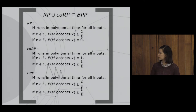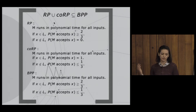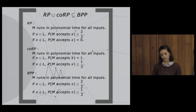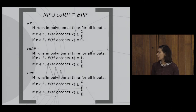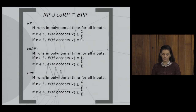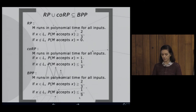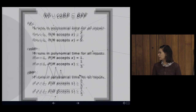The first relationship, RP ∪ co-RP ⊆ BPP, is quite simple and follows from the definitions. For RP, if x is in the language we accept with probability at least 2/3, otherwise with zero probability. For co-RP, if x is in the language we accept with probability 1; otherwise the error is less than 1/3. Since 1 > 2/3 and 0 < 1/3, both clearly satisfy BPP's requirements.